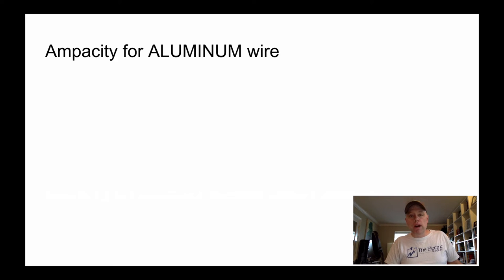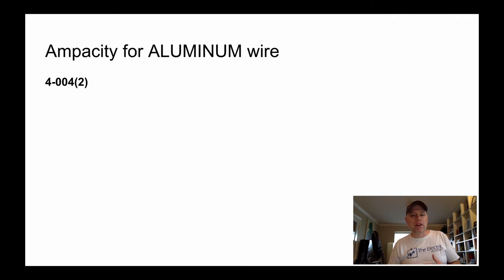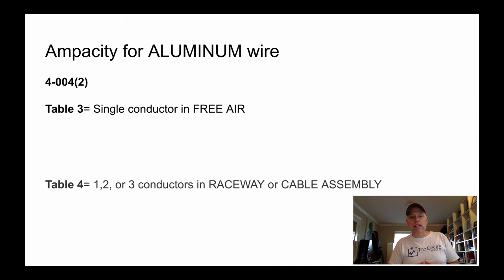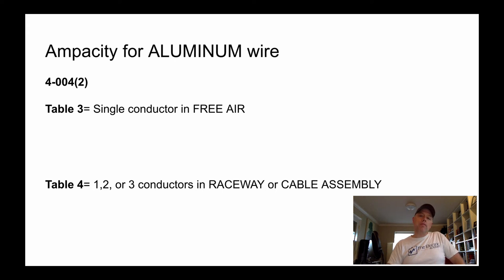The ampacity for aluminum wire follows the same ideas and is found in 4-004 subrule 2. Aluminum handles a slightly different ampacity than copper, so the tables are different. For a single aluminum conductor in free air, we use table 3. For one, two, or three aluminum conductors in a raceway or cable assembly, we use table 4. The important part is recognizing whether you're dealing with aluminum or copper wire, because your tables are totally different.